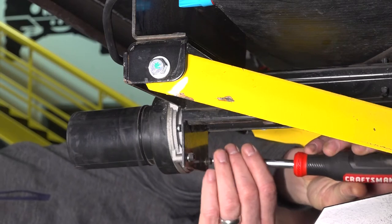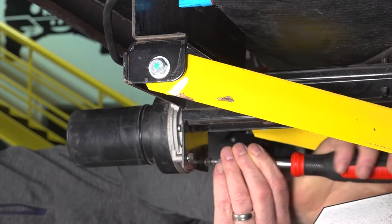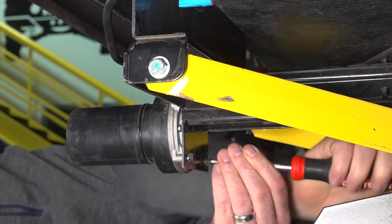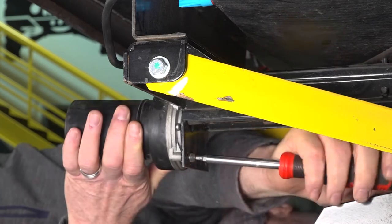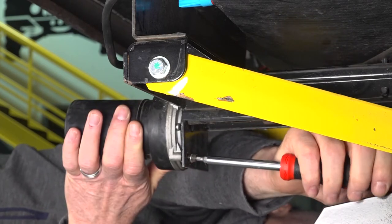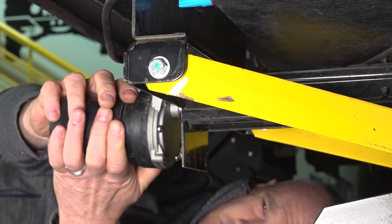Then remove the two screws coupling it to the frame of the stabilizer. Set the screws aside for later, then uninstall the motor.